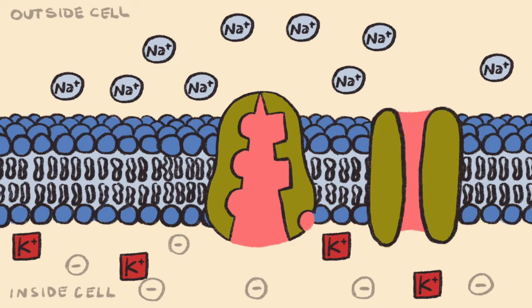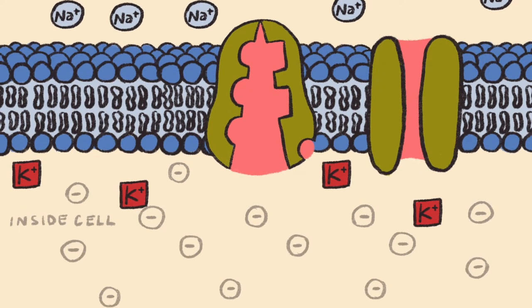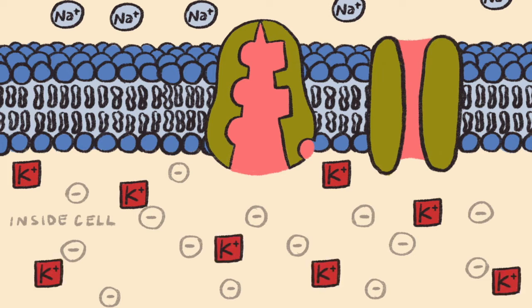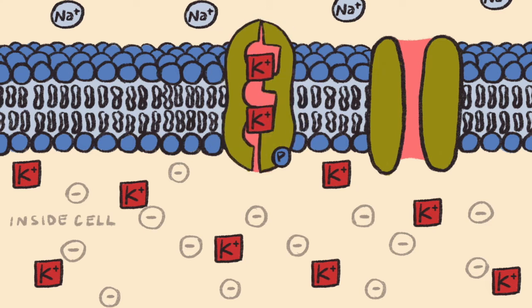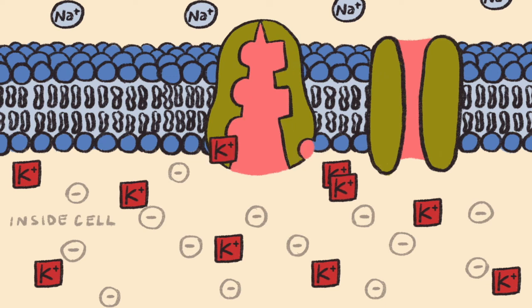An important question is: how does the inside of the neuron end up being so negatively charged if there are so many potassium ions, which are positively charged? The first answer lies in that for every three positively charged sodium ions pumped out of the neuron, only two positively charged potassium ions are moved back inside. This results in a net loss of one positive ion per pump, which ultimately makes the inside of the neuron more negative.